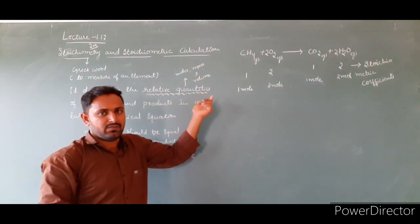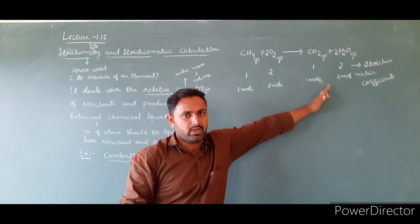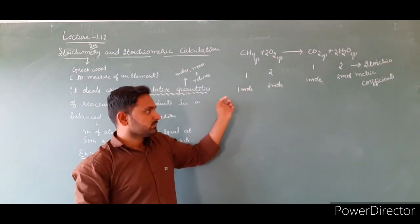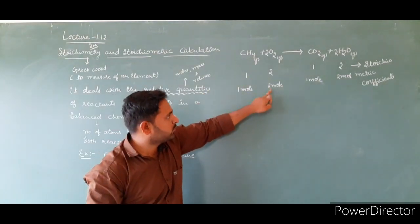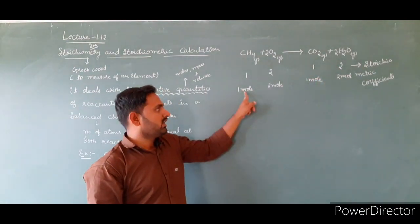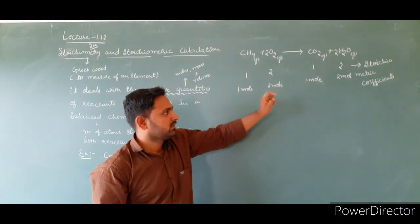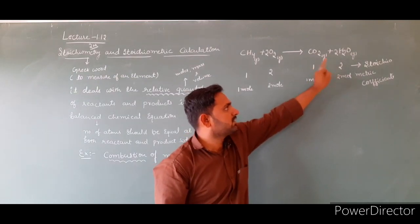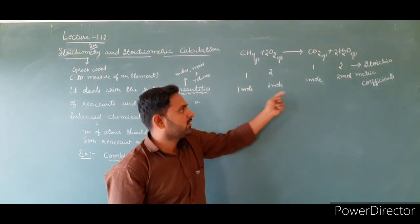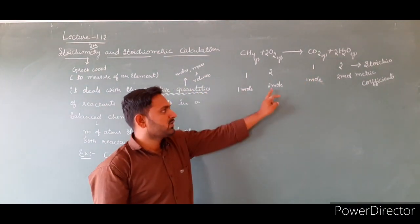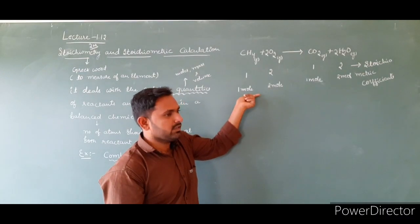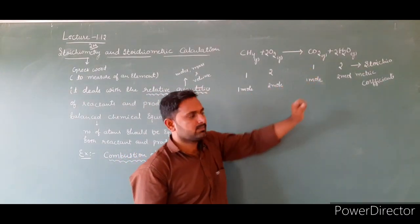So what is stoichiometry? The study of relative moles of reactants and products. One mole of methane reacts with two moles of oxygen and gives one mole of carbon dioxide and two moles of water. For one mole of methane, two moles of oxygen is required to produce one mole of carbon dioxide.